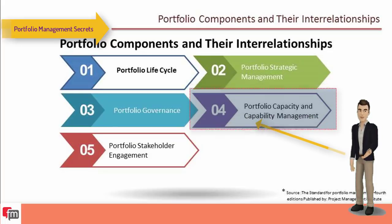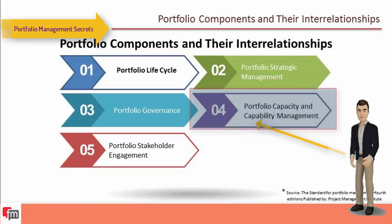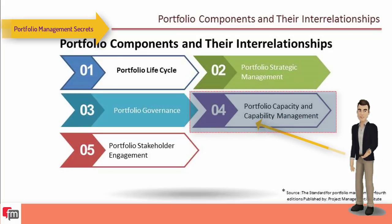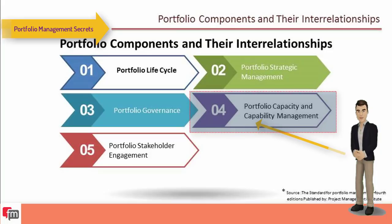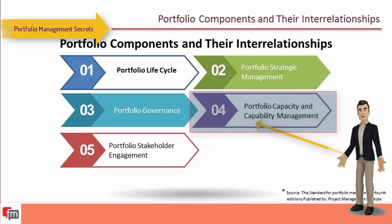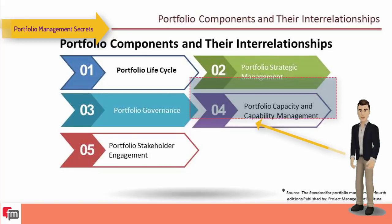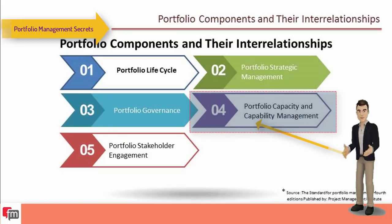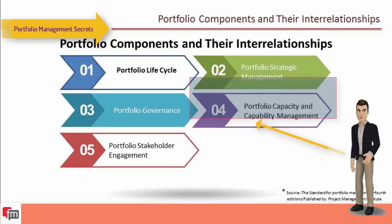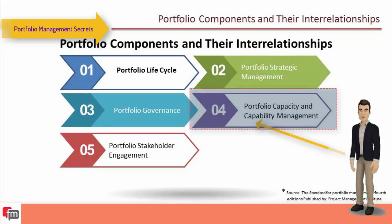This is particularly important when resourcing and balancing program and project components against operational components. Capacity management is one of the most complex and critical areas within portfolio management, addressing the overall resource demands for portfolios. An organization's capacity needs occur primarily across four categories: human capital, financial capital, physical assets such as machinery and office space, and intellectual capital.